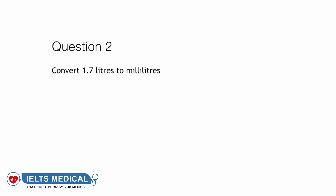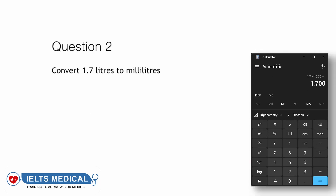Question 2 — a short one. Convert 1.7 litres to millilitres. That's multiplying by 1000, so the answer is 1700 millilitres.